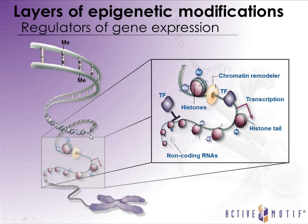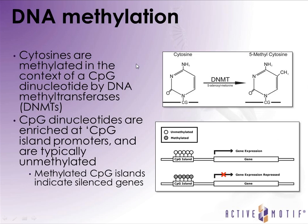To give you a little background: DNA methylation happens at cytosines, specifically in the context of a CpG dinucleotide, and this modification happens by way of DNA methyltransferases. CpG dinucleotides are enriched at what are called CpG islands, which are often found at promoter regions. When these are unmethylated, the gene is typically expressed, and when they become methylated, the gene is then repressed.